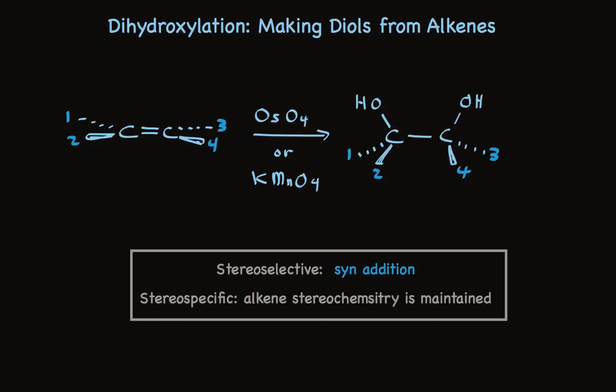In summary, using osmium tetroxide or potassium permanganate, dihydroxylation can be accomplished in good yields. The reaction is stereoselective — it proceeds with syn addition — and is stereospecific. The stereochemistry of the alkene is maintained throughout the process and in the product. In part because of this control over stereochemistry, this dihydroxylation reaction finds widespread use in organic synthesis.